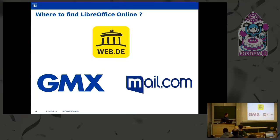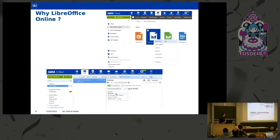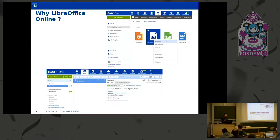Now that we know where we can find LibreOffice Online, let's see why. 1&1 Mail and Media offers cloud and email solutions, so most probably we'll have files in the cloud and attachments in emails. Due to this, we needed a way to preview files quickly and to edit them without leaving the portal, without using Microsoft Office or having to install LibreOffice on a workstation.